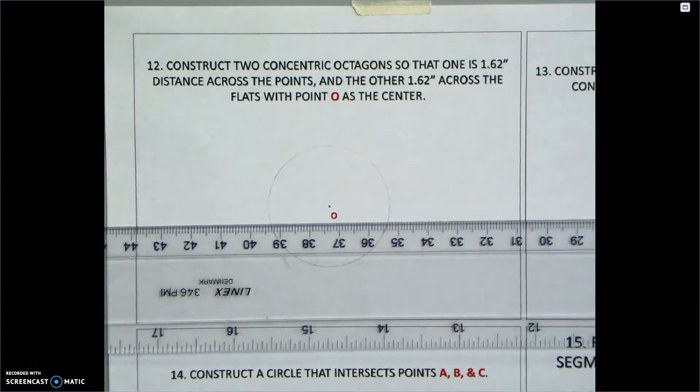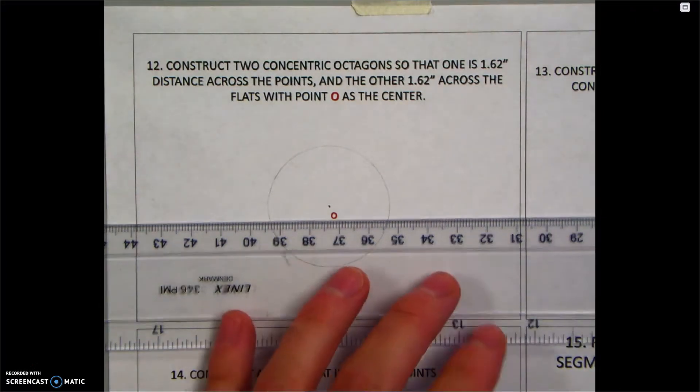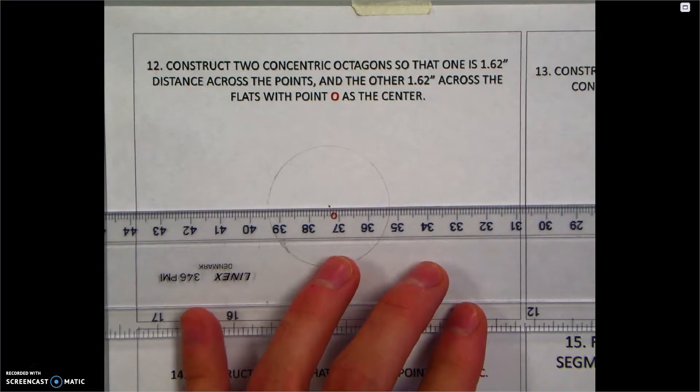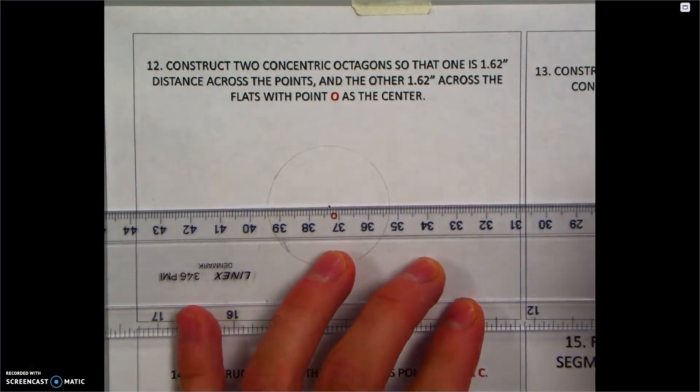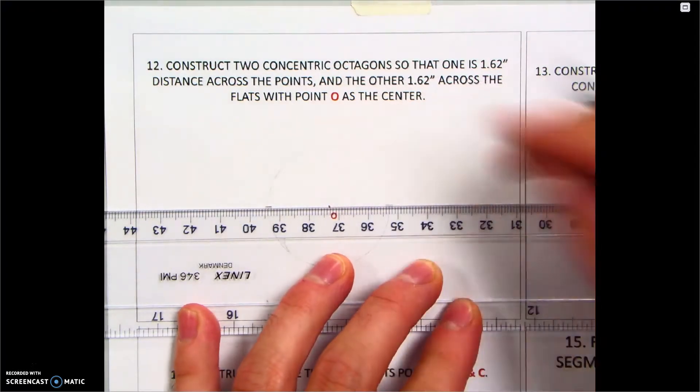I'm going to start with my T-square and triangle combo. We'll do the inscribed first. The inscribed octagon means that all of the points are going to touch the circle on the inside. So what I want to begin with is a horizontal line. I'm just going to line it up there with point O and put a little mark on the left and on the right.